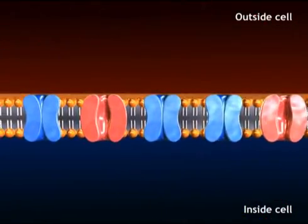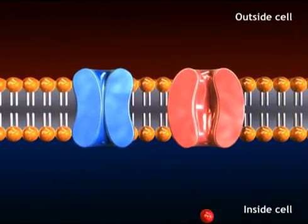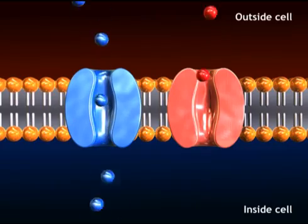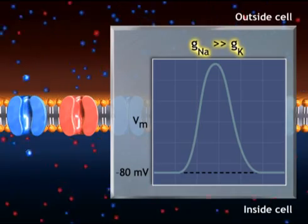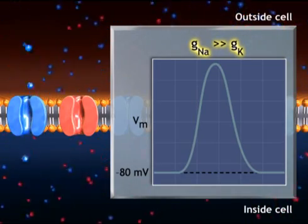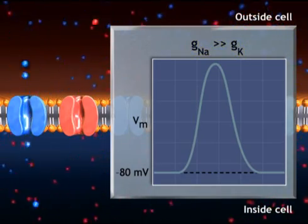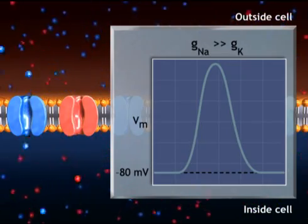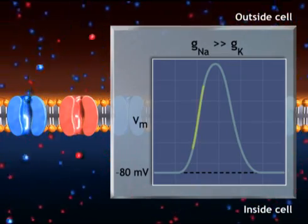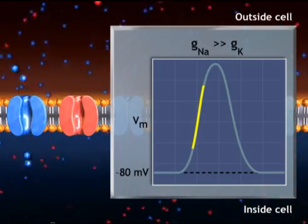When the sodium channels are suddenly opened, sodium ions rush into the cell. At this point, sodium conductance exceeds potassium conductance. Accordingly, the membrane potential becomes more positive as it approaches the equilibrium potential for sodium. This change represents the rising phase of the action potential.